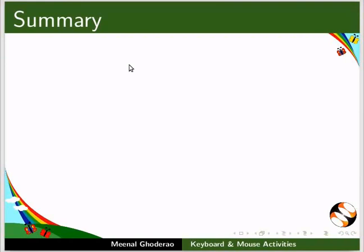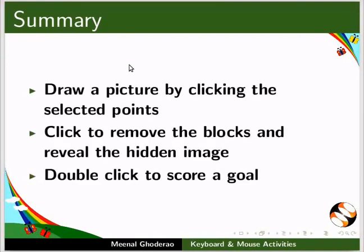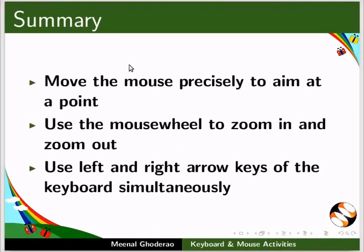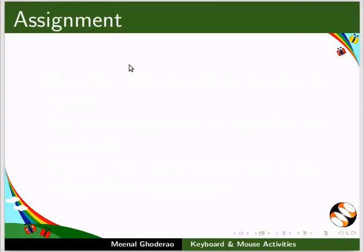In this tutorial, we have learnt how to draw a picture by clicking the selected points, click to remove the blocks and reveal the hidden image, double click to score a goal, move the mouse precisely to aim at a point, use the mouse wheel to zoom in and zoom out, and use the left and right arrow keys of the keyboard simultaneously. As an assignment, explore the following activities in the mouse and keyboard section.